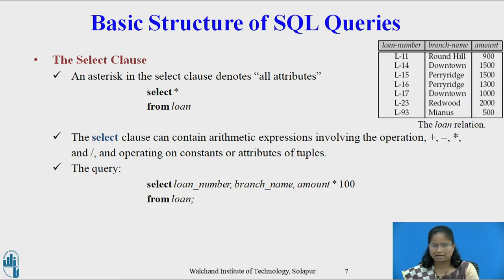The SELECT clause can contain arithmetic expressions involving operations: plus, minus, multiplication, and division, operating on constants or attributes of tuples. The query SELECT LOAN_NUMBER, BRANCH_NAME, AMOUNT * 100 FROM LOAN would return a relation that is the same as the loan relation, except the attribute amount is multiplied by 100.